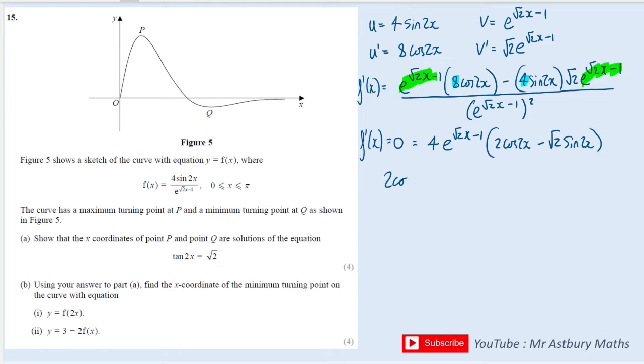So I could write that 2 cos 2x minus root 2 sine 2x needs to equal 0. And I can then add the root 2 sine 2x to the other side, because now if I divide through by cos, I'm going to get the tan which I so desire.